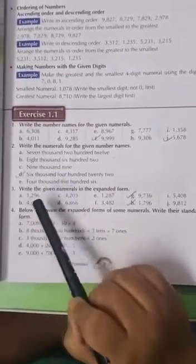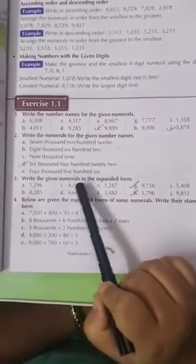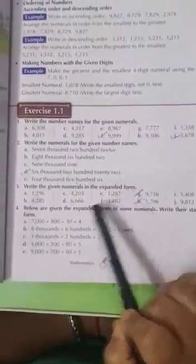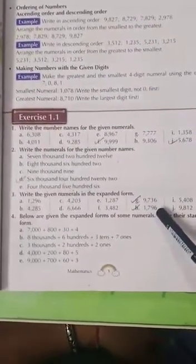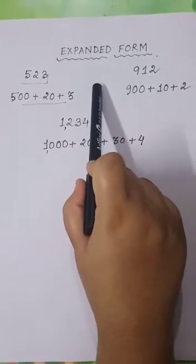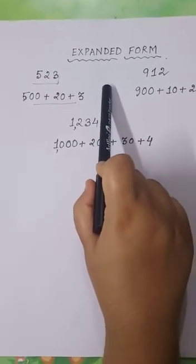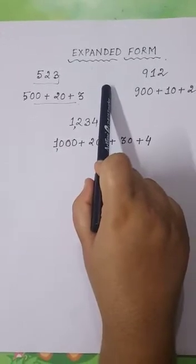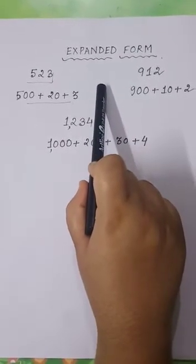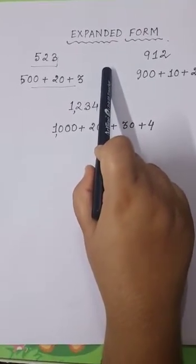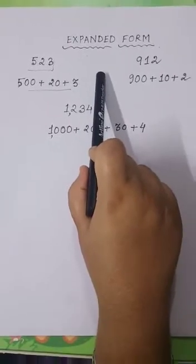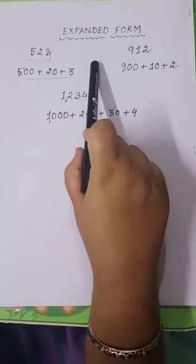Our question number 3 is: Write the given numerals in the expanded form. Here few numerals are given and you are asked to write these numerals in expanded form. Now what do you mean by the term expanded form? Expanded form means to break a number by using addition symbol between the place value of each of its digits. We expand the number to know the value of each of its digits. When we expand to show the value of each digit, we are writing that number in expanded form.